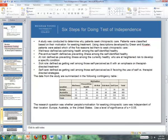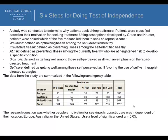Now, stop the video and read through this problem. A study was conducted to see why patients seek chiropractic care. Patients were classified based on their motivation for seeking treatment: wellness, preventative health, at risk, sick role, and self-care — five different roles. The research question was whether people's motivation for seeking chiropractic care was independent of their location — Europe, Australia, or the United States — using a level of significance of alpha equal to 0.05.